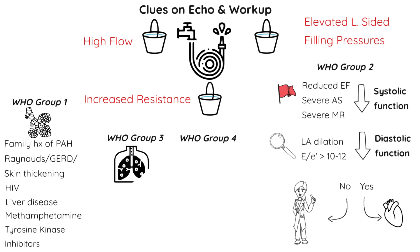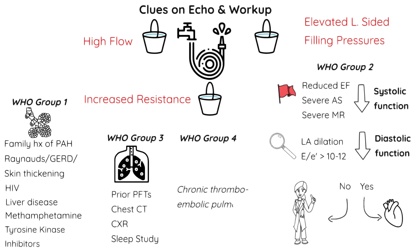Next, in WHO group 3, think about chronic lung diseases or chronic hypoxemia. Look for prior PFTs or chest CTs; if unavailable, start with a chest x-ray and order a sleep study to evaluate for sleep apnea. Also think about WHO group 4, which includes CTEPH — screen with a VQ scan first. If you're suspecting increased pulmonary vascular resistance, refer the patient to a pulmonary hypertension specialist for more advanced workup.